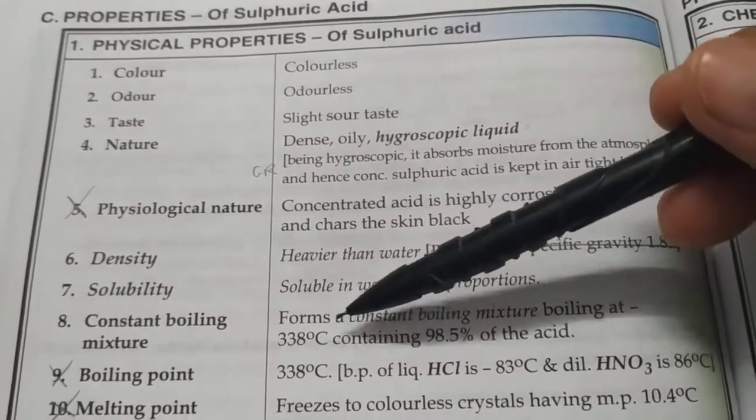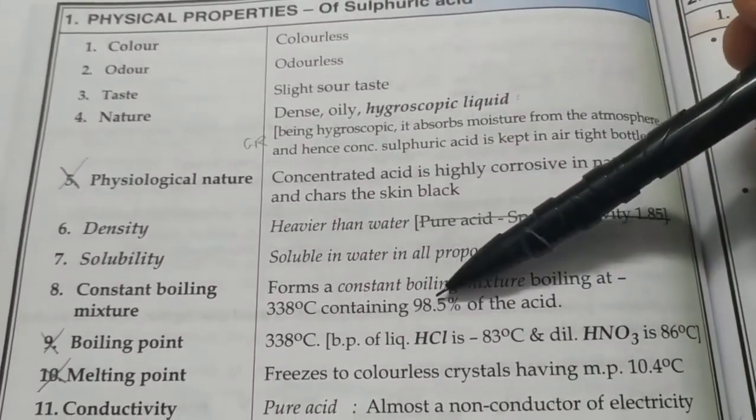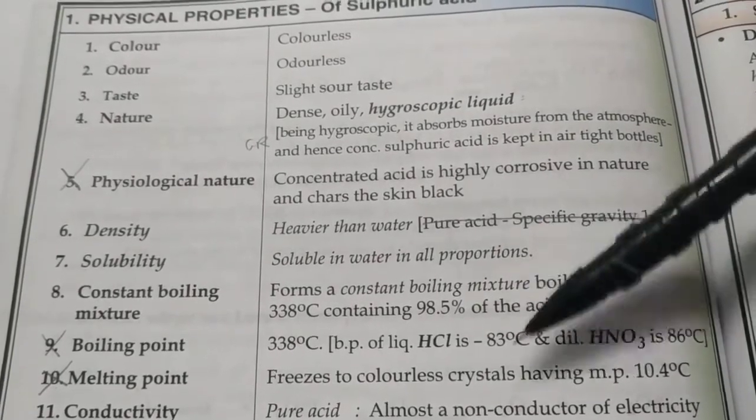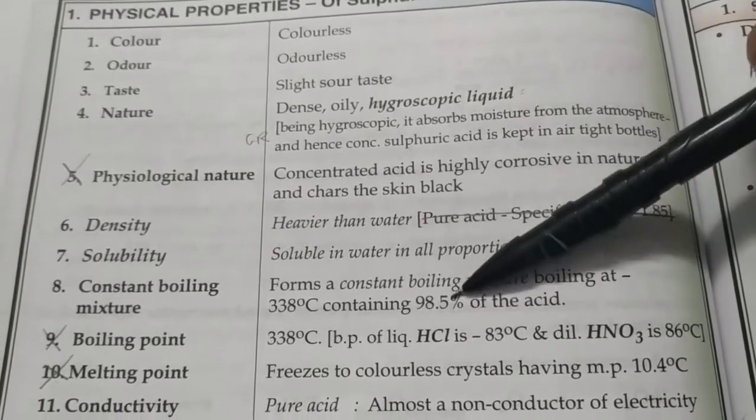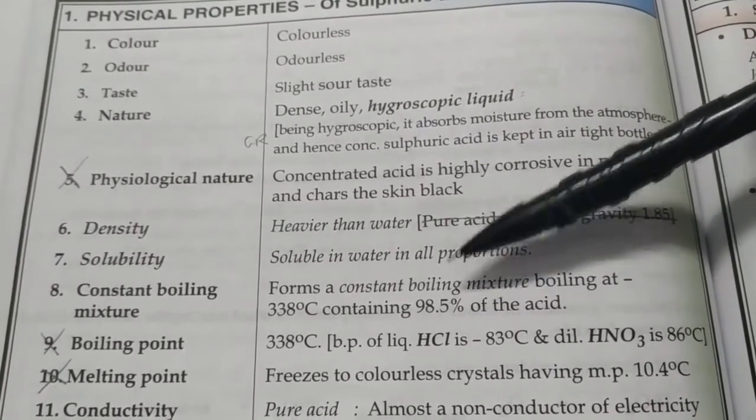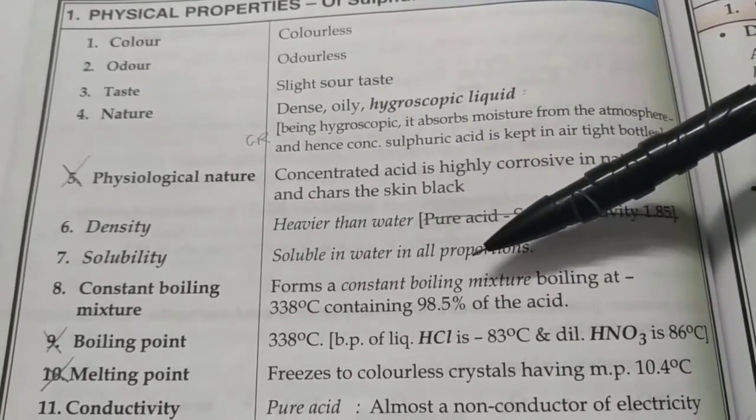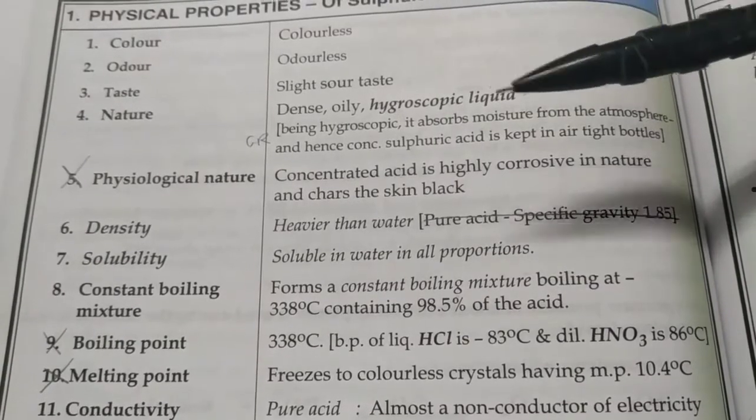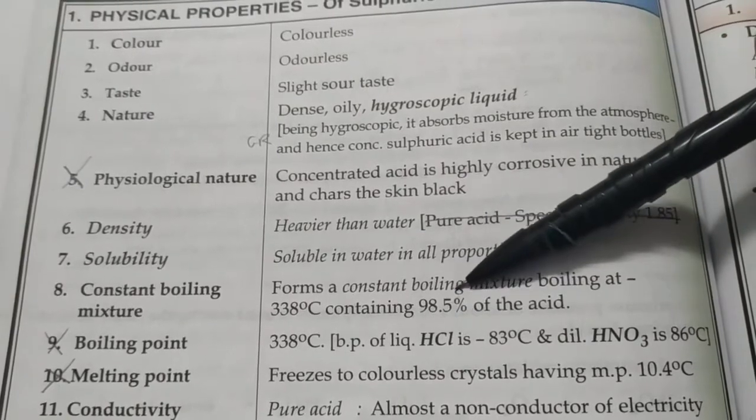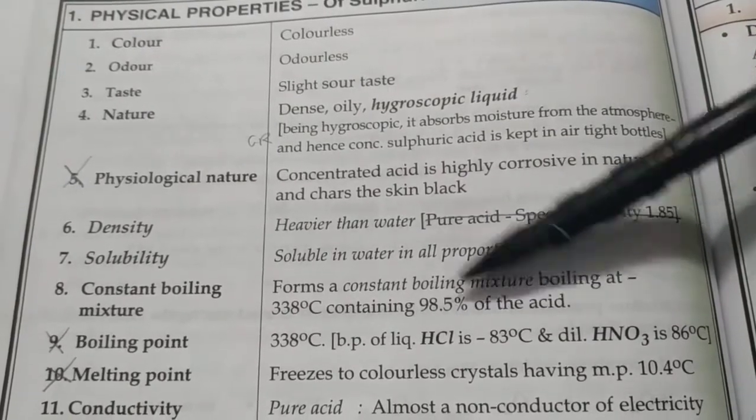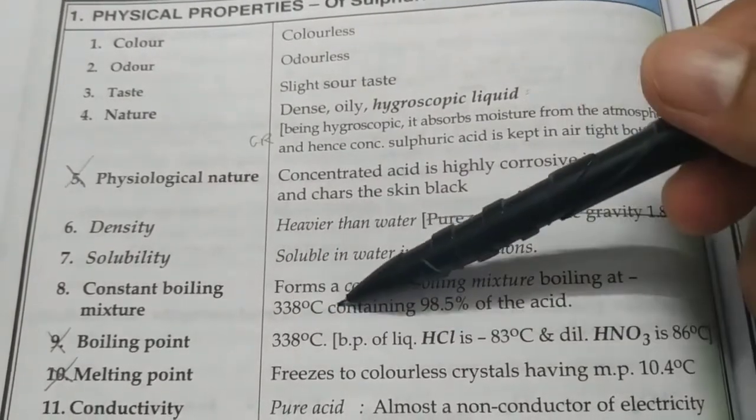It forms a constant boiling mixture at 338°C containing 98.5% of the acid. If you want to concentrate it further, boiling won't help because if you boil it beyond this, along with water even sulfuric acid vapors will vaporize in the same ratio, so effectively the concentration will remain the same. That is why we call this acid a less volatile or non-volatile acid.